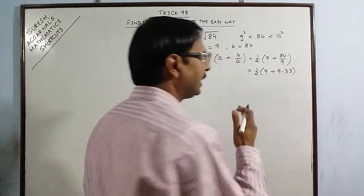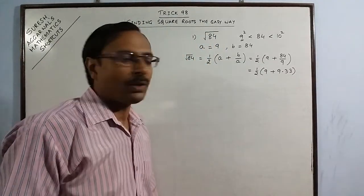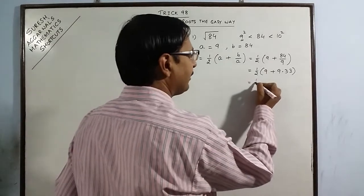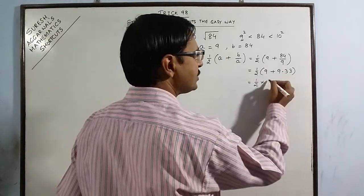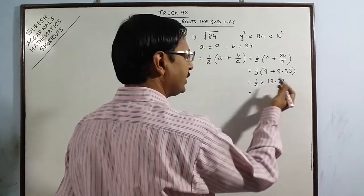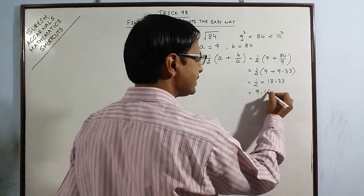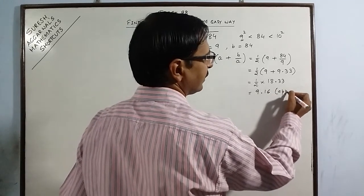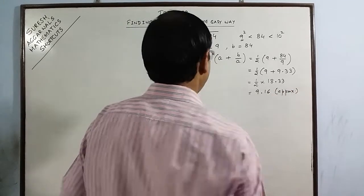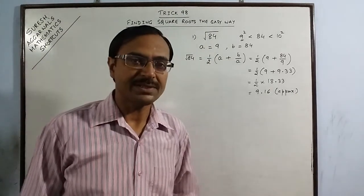So this will repeat 9.333 will be the quotient. Now half of the sum of these two numbers is 18.333, so if you divide 18.333 by 2, this will come out to be 9.16 approximately. So the value of square root of 84 is 9.16 approximate.